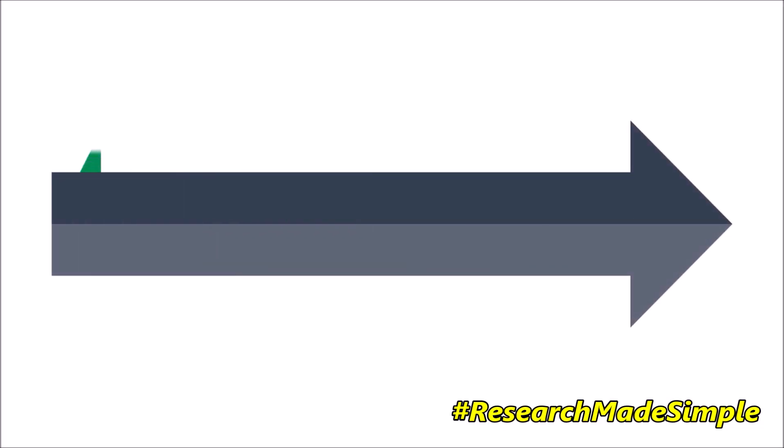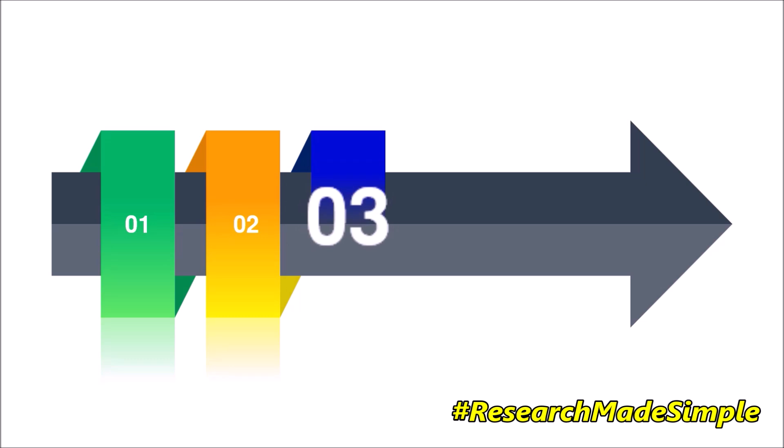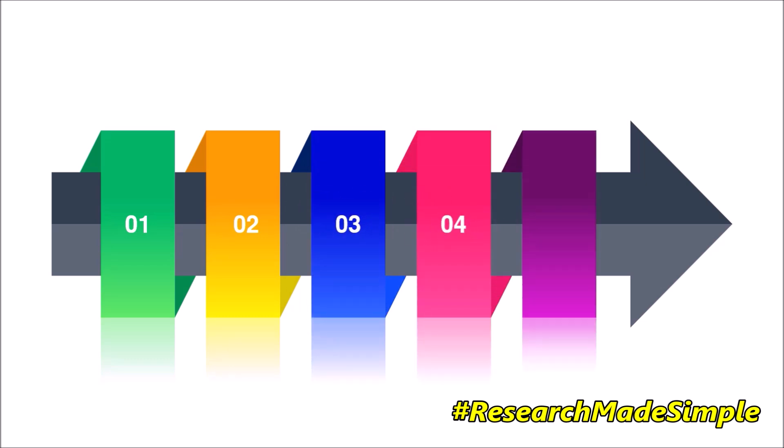Hello friends, this is Professor Krunal K. Punjani. While writing a quality research paper for journals indexed in Scopus and ABDC, the first important task is to identify and finalize an appropriate research topic. In this video, let us discuss a five-step process of finalizing an appropriate research topic. Let's begin with the first step.